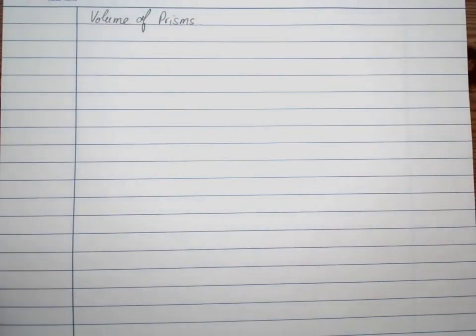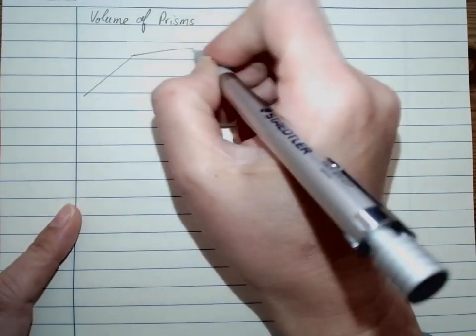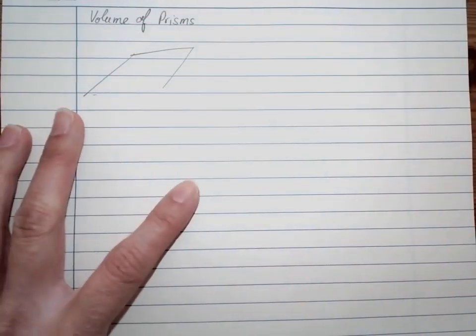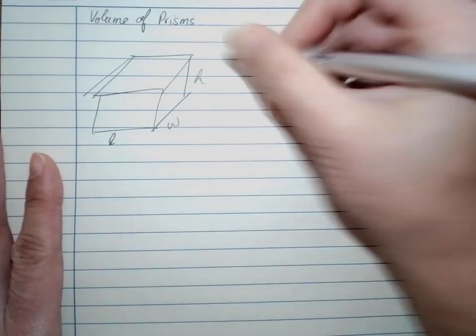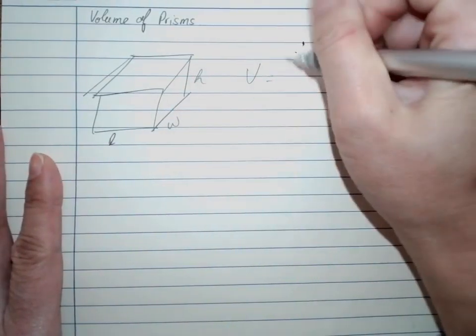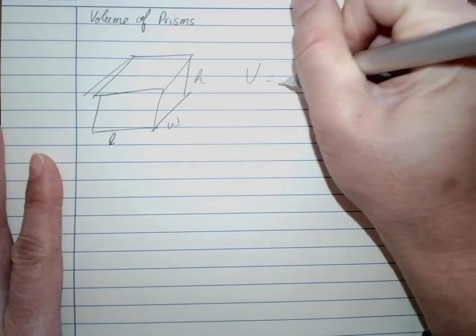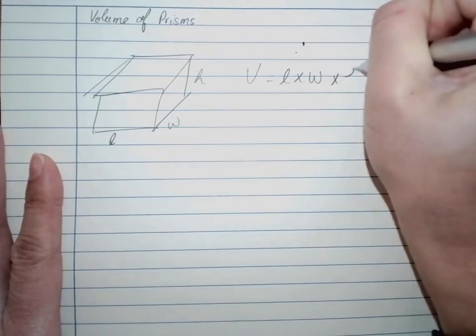Alright, volume of prisms. In general, the formula if we have a cubic shape here, we will have length, width, and height. The volume will be equals to length times width times height. It's that easy.